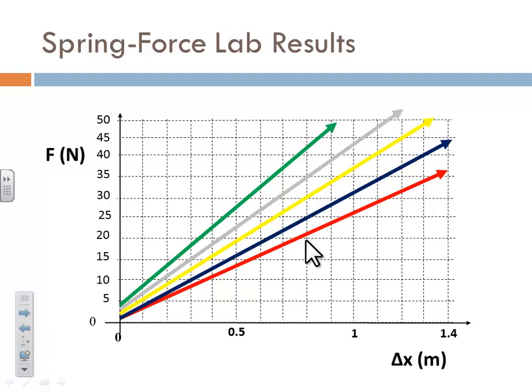And if you had the red spring, they manufactured that to have a spring strength of about 25 newtons per meter. So if you guys got close to that, which you did, you guys measured it properly.